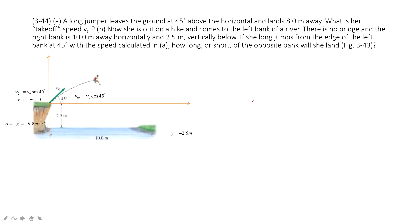In this one, this is still projectile motion. You can see, first one tells us a long jumper leaves the ground at this angle, 45 degrees above the horizontal, and lands 8 meters away.